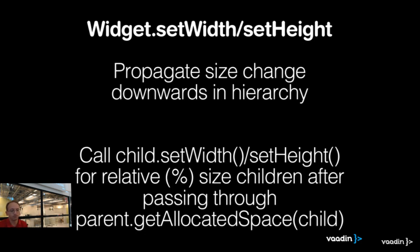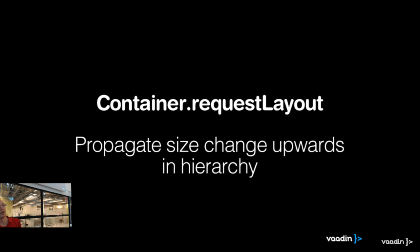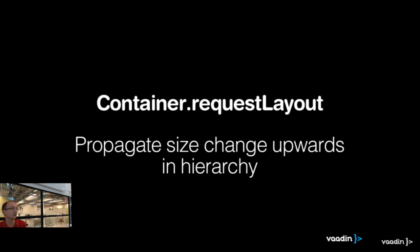This is basically what GWT also offers — something that goes down in the hierarchy: whenever the parent changes, the child changes. There's also another feature in Vaadin 6: the container interface has a method called RequestLayout. The child widgets, whenever they change, call the parent and say RequestLayout — basically a way to propagate size change upwards in the hierarchy: 'my size might have changed, please check if you need to do something.' So it's an onResize in the other direction.